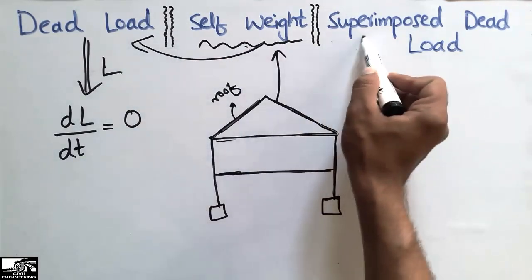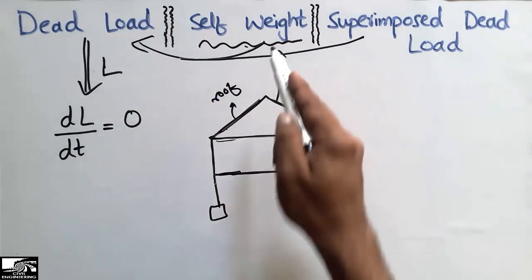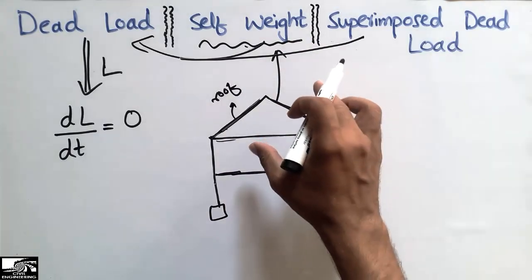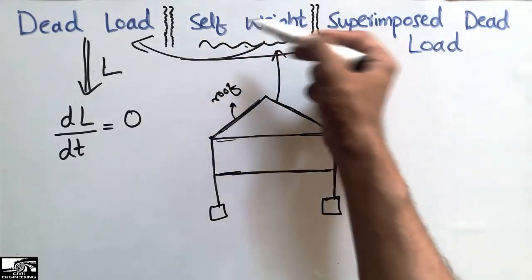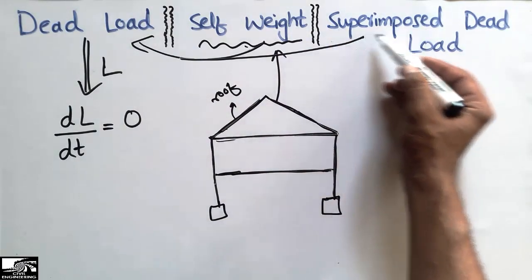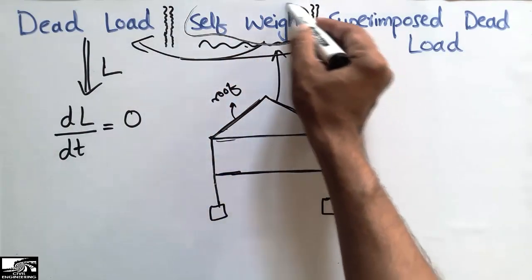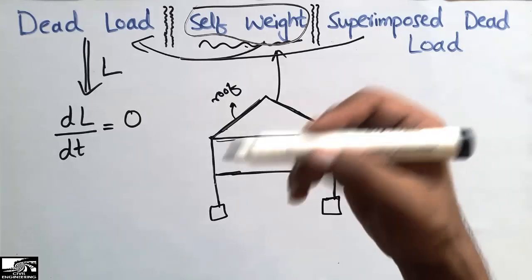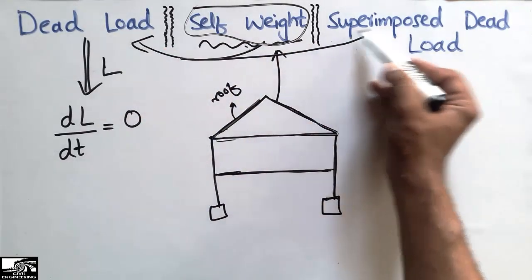The self weight and the superimposed dead load are subcategories of the dead load, but their definitions are a little bit different. They are also dead loads — the self weight is the weight of the structure itself. The self weight makes up the majority of the dead loads, more than 60% of the dead load.